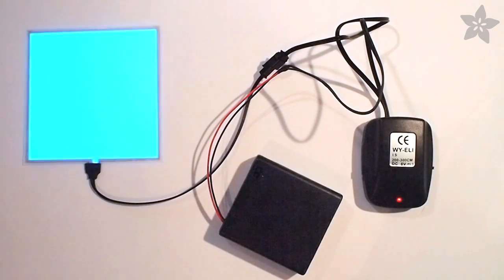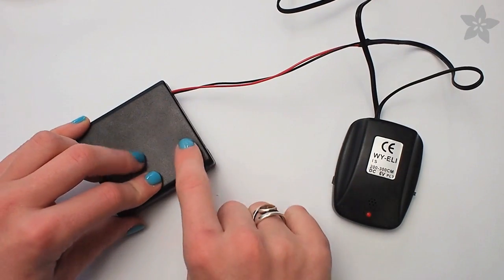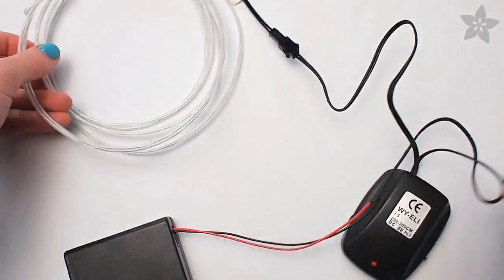This is the 6-volt sound-activated EL inverter from Adafruit. It's perfect for portable projects because you can power it with just four AA or AAA batteries, which can then easily fit in your pocket.